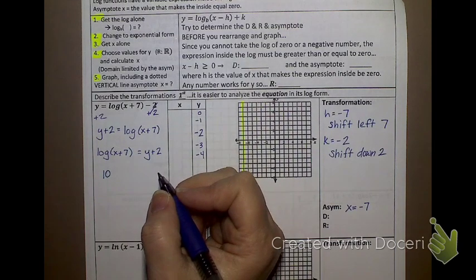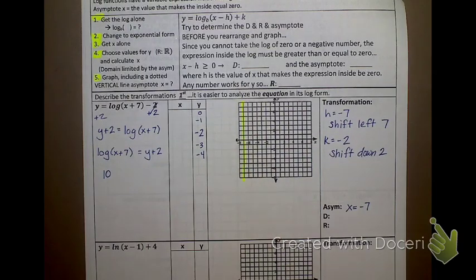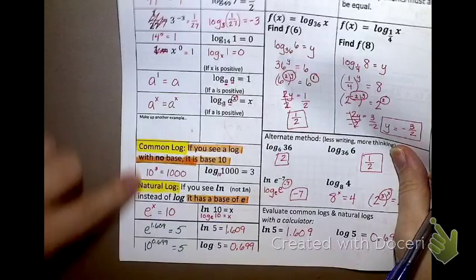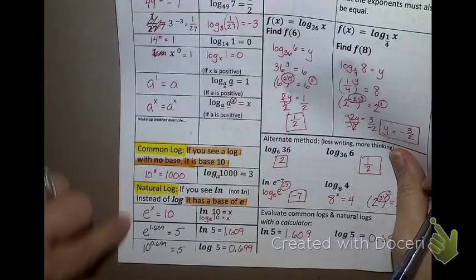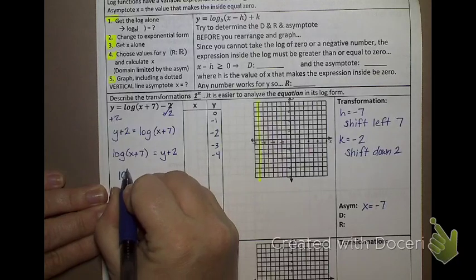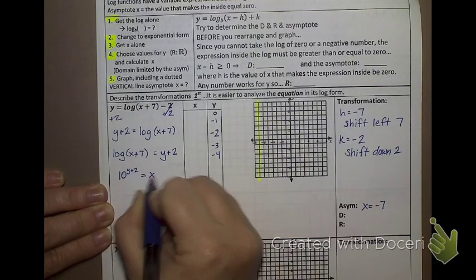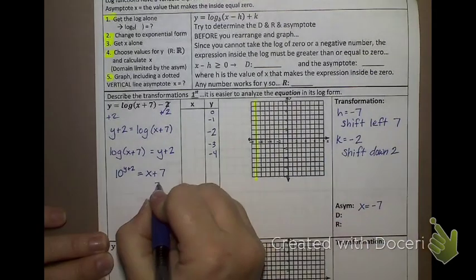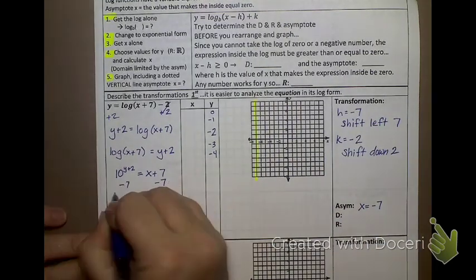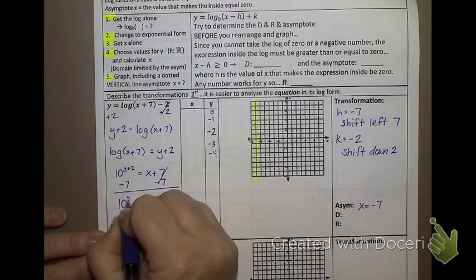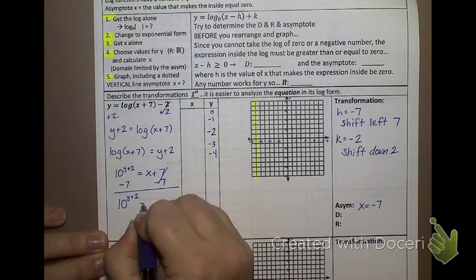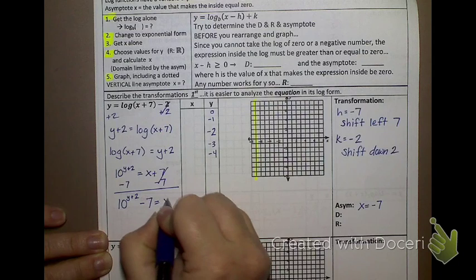Now, a lot of times people get messed up when the log isn't on the left. So, if you're going to get confused at all going to exponential form, write log of x plus 7 on the left and then y plus 2 on the right. Sometimes that helps make the change a little bit more clear. What's my base? 10. 10. How do I know? Log is 10. Because a log with no base written is known as a common log, which means it has a base of 10.